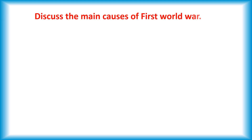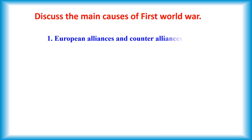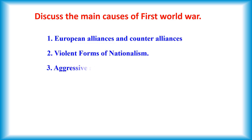Hi, the first question is: Discuss the main causes of the First World War. The answer is as follows. 1. European alliances and counter-alliances. 2. Violent forms of nationalism. 3. Aggressive attitude of the German Emperor.